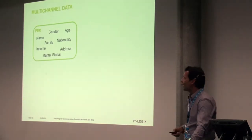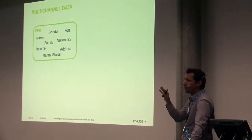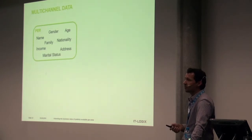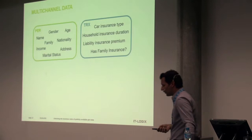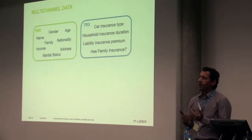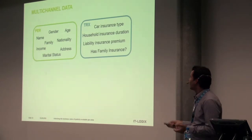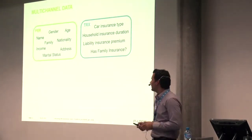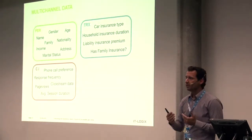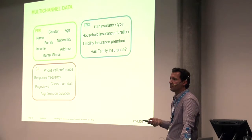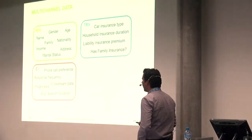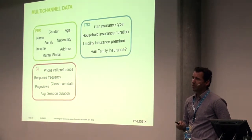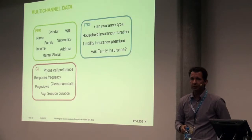The data we use in this type of analysis falls into four categories. First, personal information about customers — like gender, age, family status, nationality. Second, transactional data — what products they have, what type of car insurance, what premium they pay, the duration of their insurance. Third, channel interaction data — channel preference, whether they like phone calls, how frequently they respond. Fourth, if we have website logins, we can also use clickstream data, page views, and average session durations.